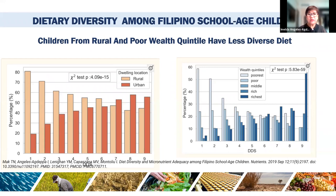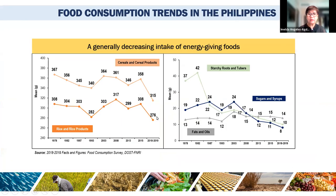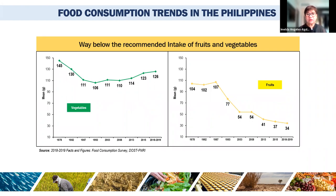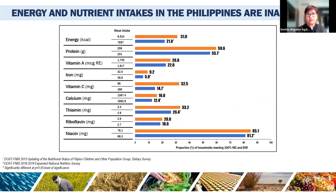Children from rural areas and lower wealth quintiles have less diverse diets, and the graph shows that rural populations are the most affected and are also the poorest. There is a decreasing intake of energy-giving foods from the 1978 survey down to the 2018–2019 survey, showing a declining trend in cereals and cereal products, starchy roots and tubers, fruits and vegetables, and meat and poultry.